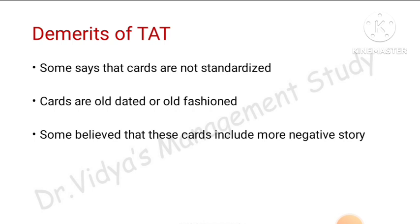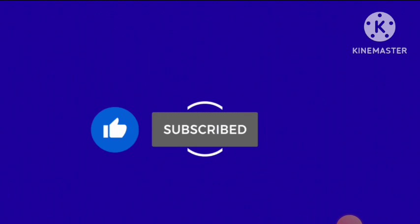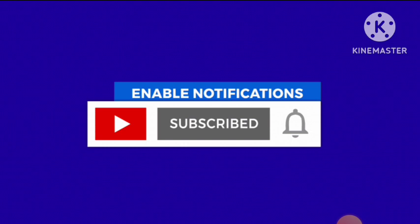The demerits of the TAT are: some say the cards are not standardized, some say the cards are outdated or old-fashioned, and some believe the cards include more negative stories. In summary, the TAT uses 31 sketch-based images — compared to the Rorschach test's 10 inkblots — and asks the subject to tell a story based on those images. Thank you so much, bye!